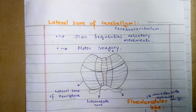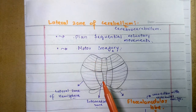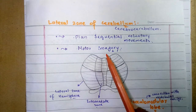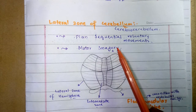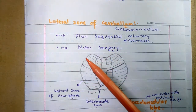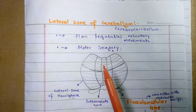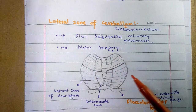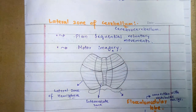The lateral zone has a role in the planning and timing of sequential movements. These movements are planned as much as tenths of a second in advance of the actual movement. This process is called motor imagery, which is processed by the lateral zone of the cerebellum.